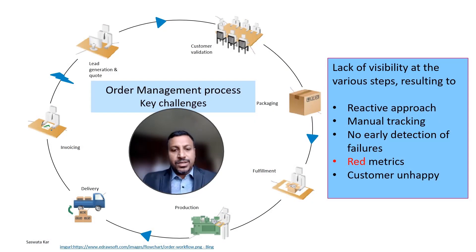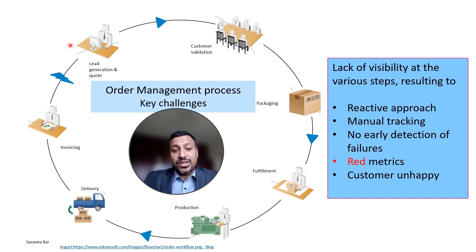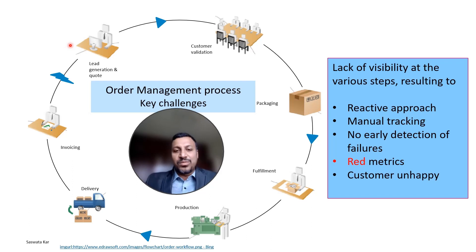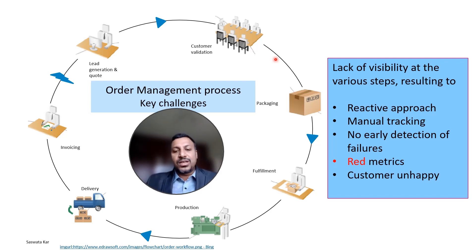What you see here is really a process that is followed by every organization when they do supply chain. One of the first parts is really when a salesperson generates a lead, and then the salesperson also works with internal organizations to come up with a code for that particular product they are selling. Then it goes into order management — how do we validate the customer information, and a little bit of packing, getting all the right vendors, right units or subunits that need to be prepared.